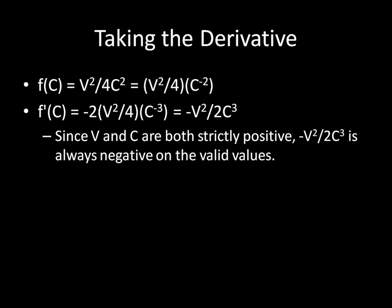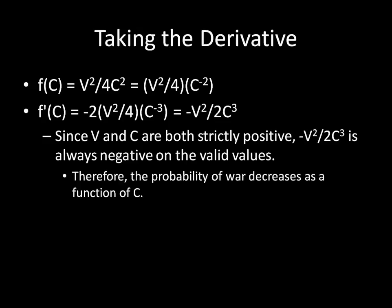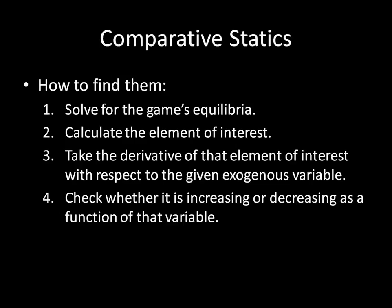What does that mean? If you remember from calculus, if a derivative is negative, then the function is decreasing. So the probability of war decreases as a function of C. As costs increase, the probability of war decreases. And that is all we have to do for comparative statics.